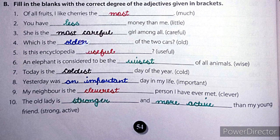Number 10: the old lady is stronger and more active than my young friend. We have done questions 1 to 10. Next, questions 11 to 20 are given for homework. That is all for today. Thank you.